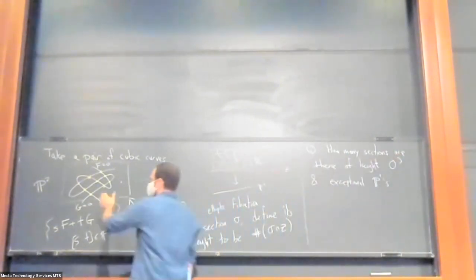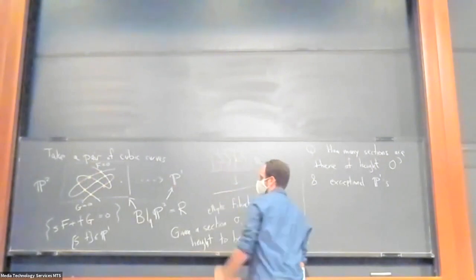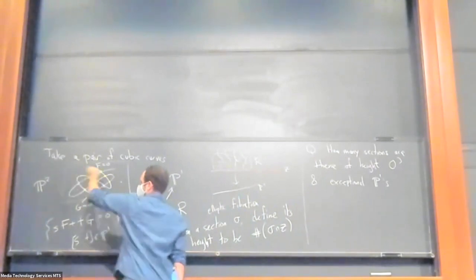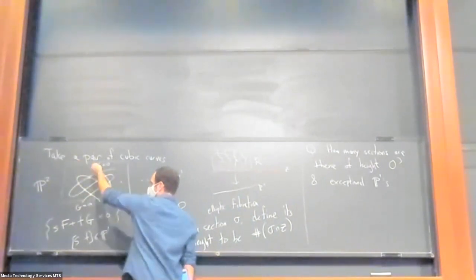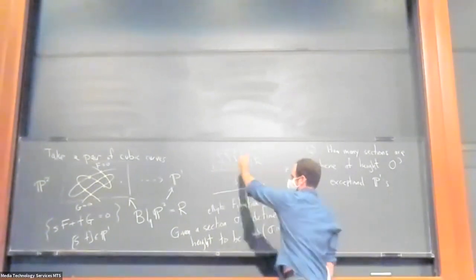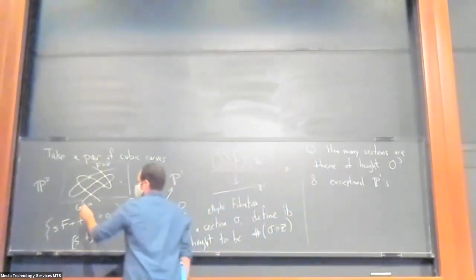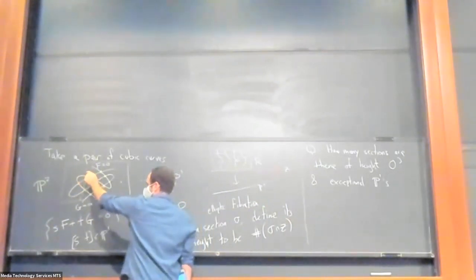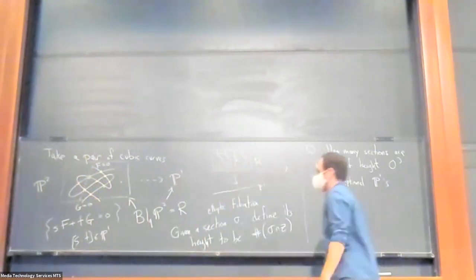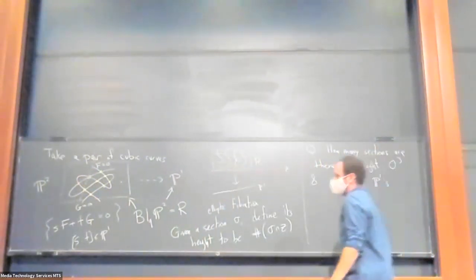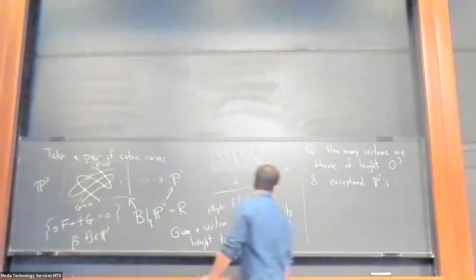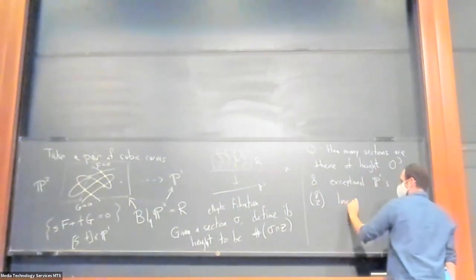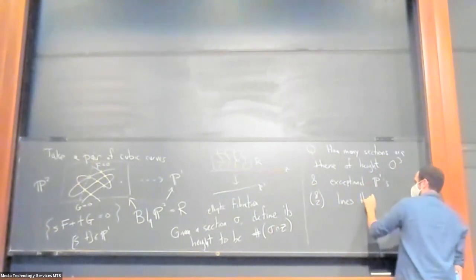So you can look for other curves in the plane, which when you do the blow up, become sections of this fibration. So the first thing to look for maybe be the lowest degree possible, which is lines. So I just take a random line and it meets each cubic in three points. So that'll be a trisection, not a section. But if you choose your line so that it passes through two of the base points, then the blow up actually separates the line from the cubics at those points. So then it actually becomes a section. So in that way, we can produce eight choose two more sections of height zero, which are lines from P2 through two of the base points.